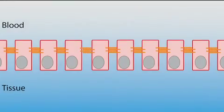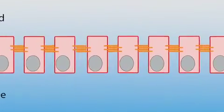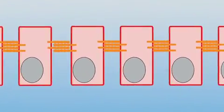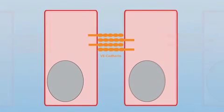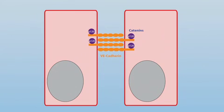The endothelial cells that line blood vessels are held together by adherence junctions containing the transmembrane adhesion molecule VE-cadherin and the cytoplasmic adapter proteins P120.